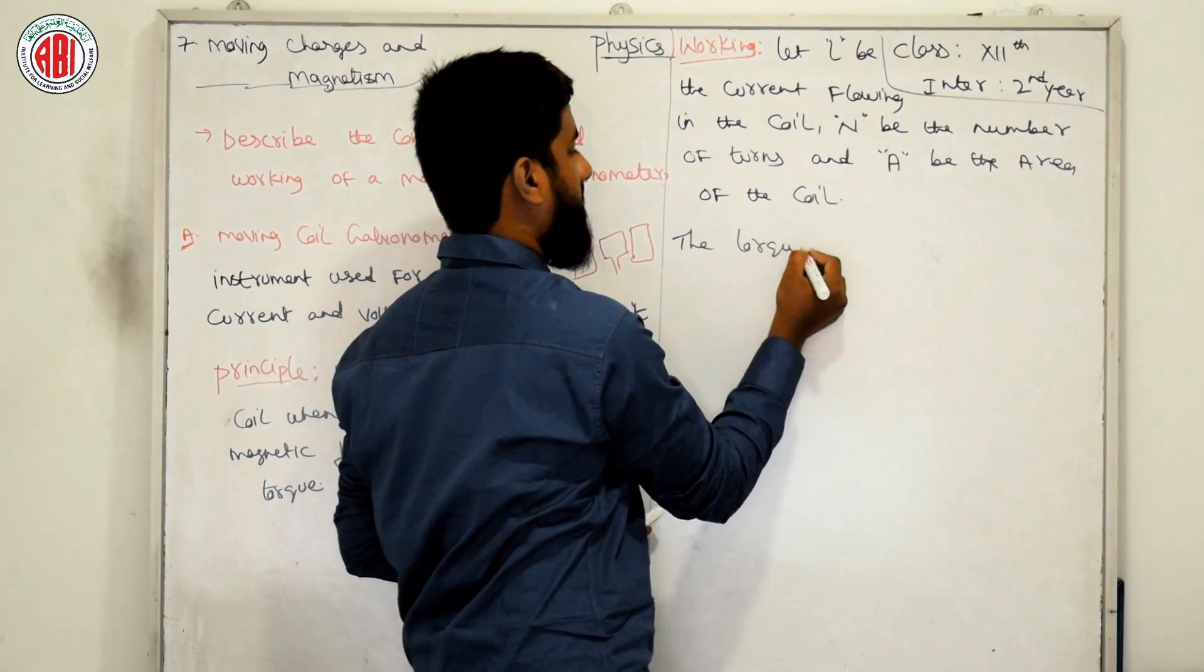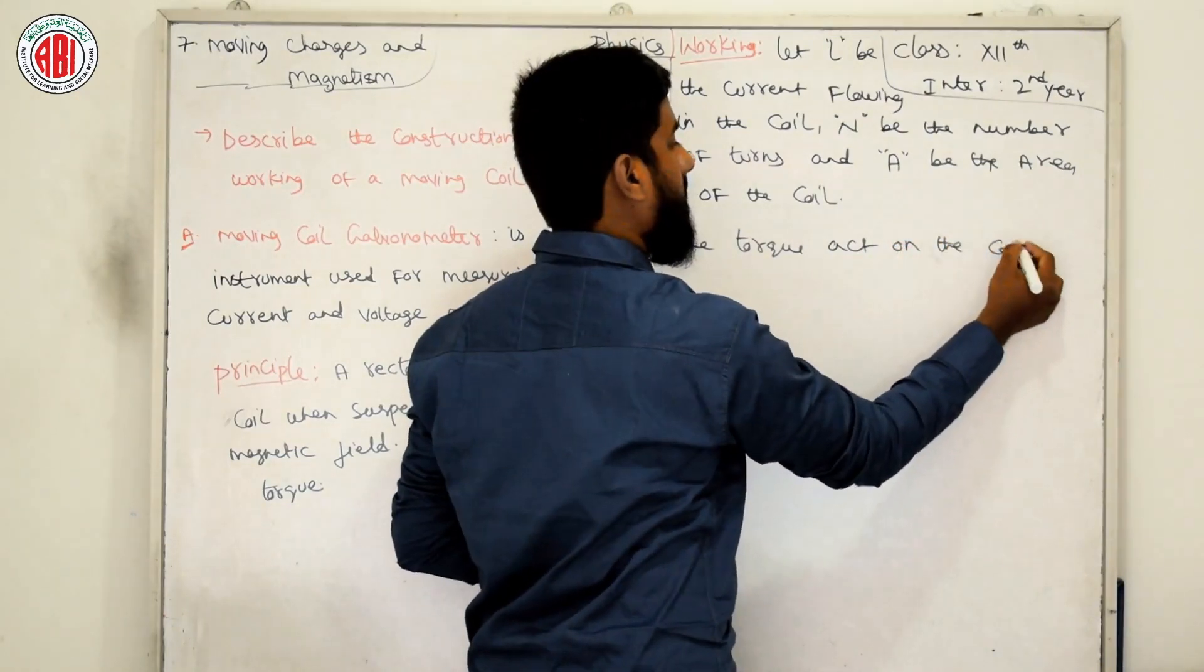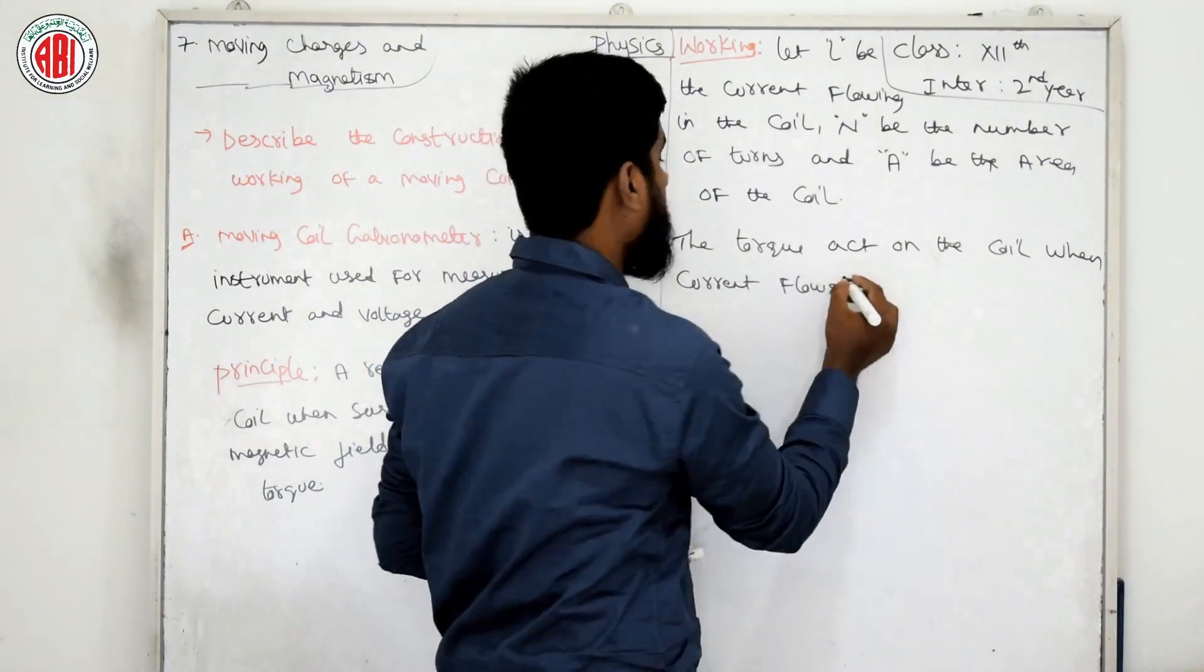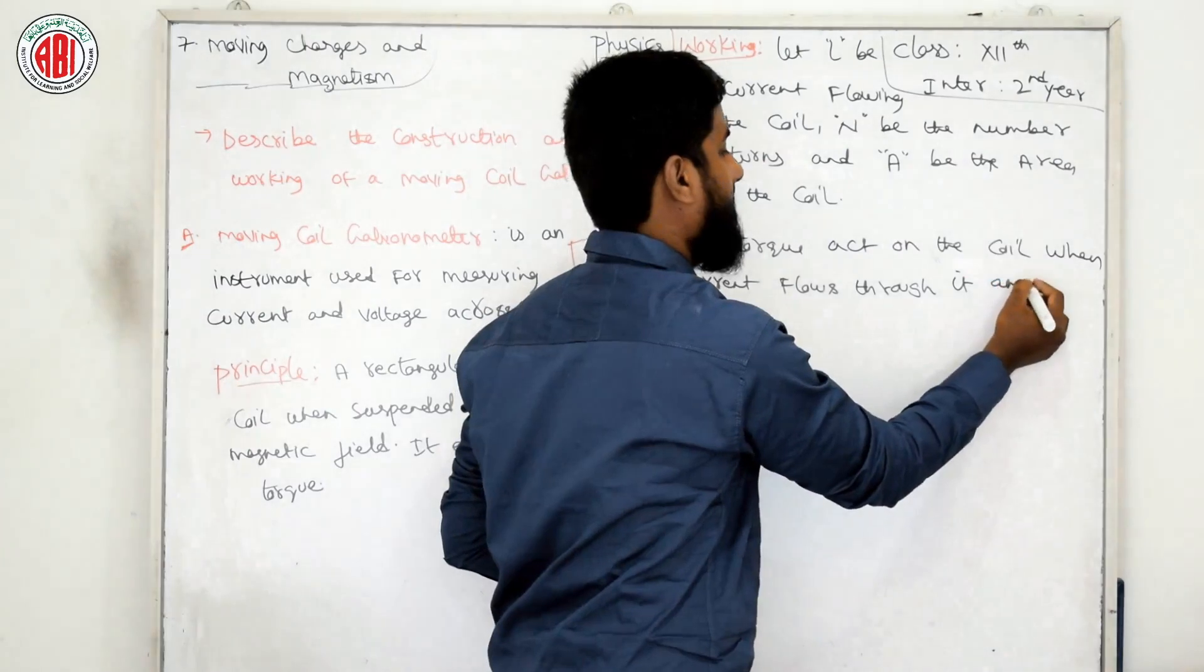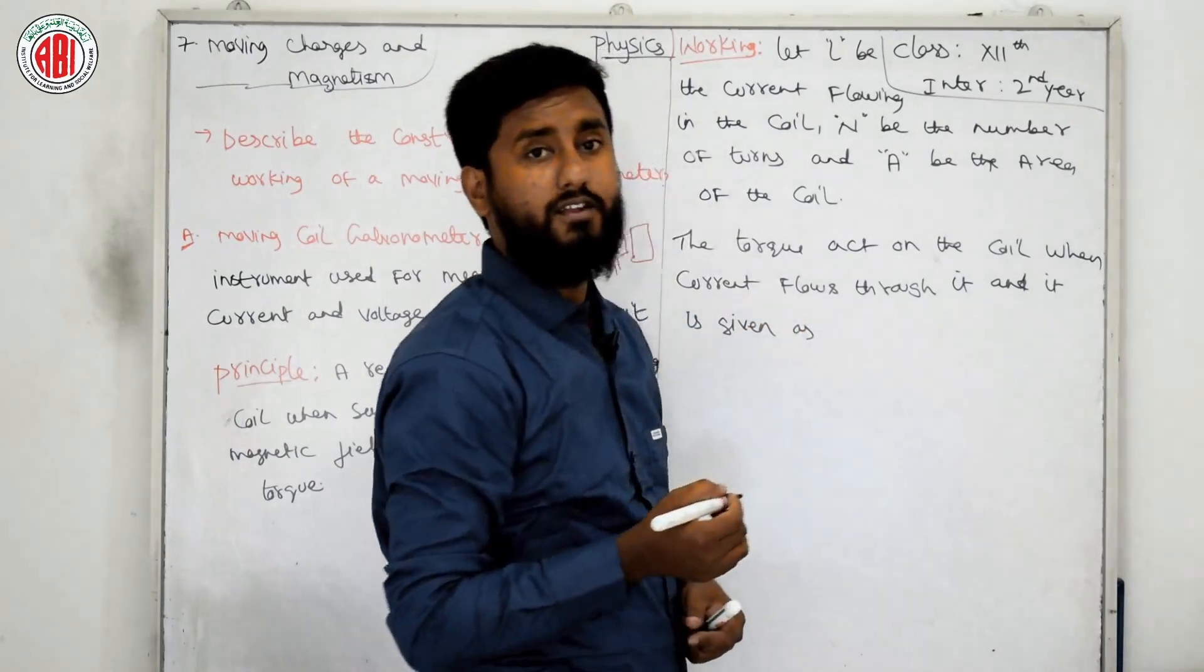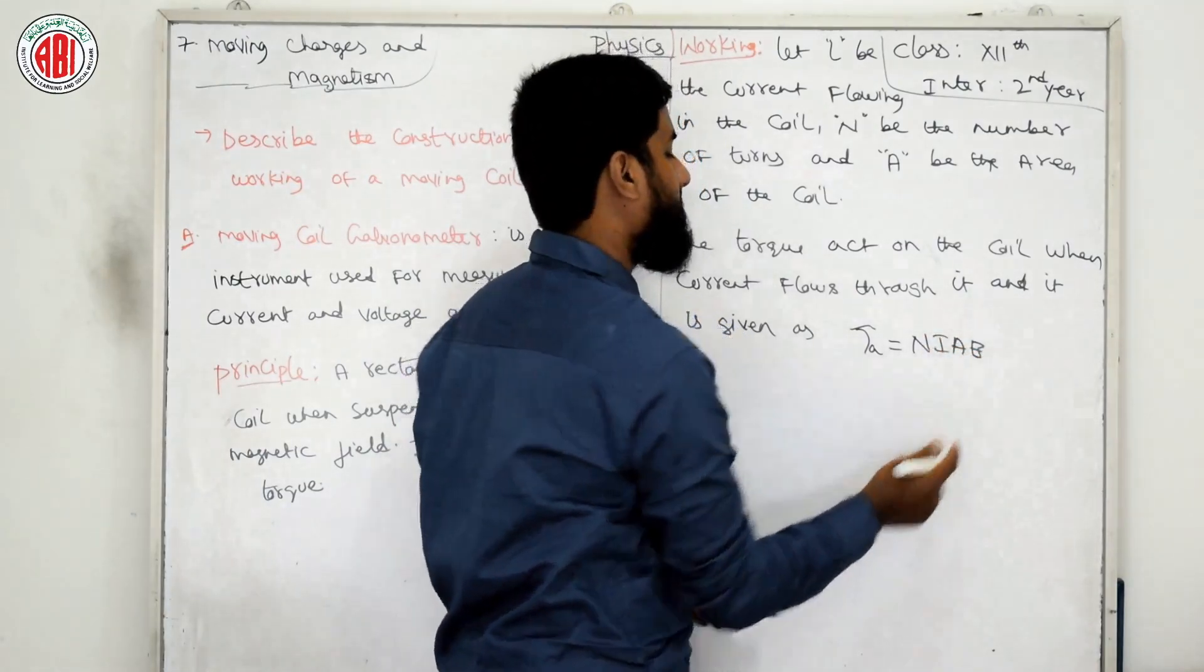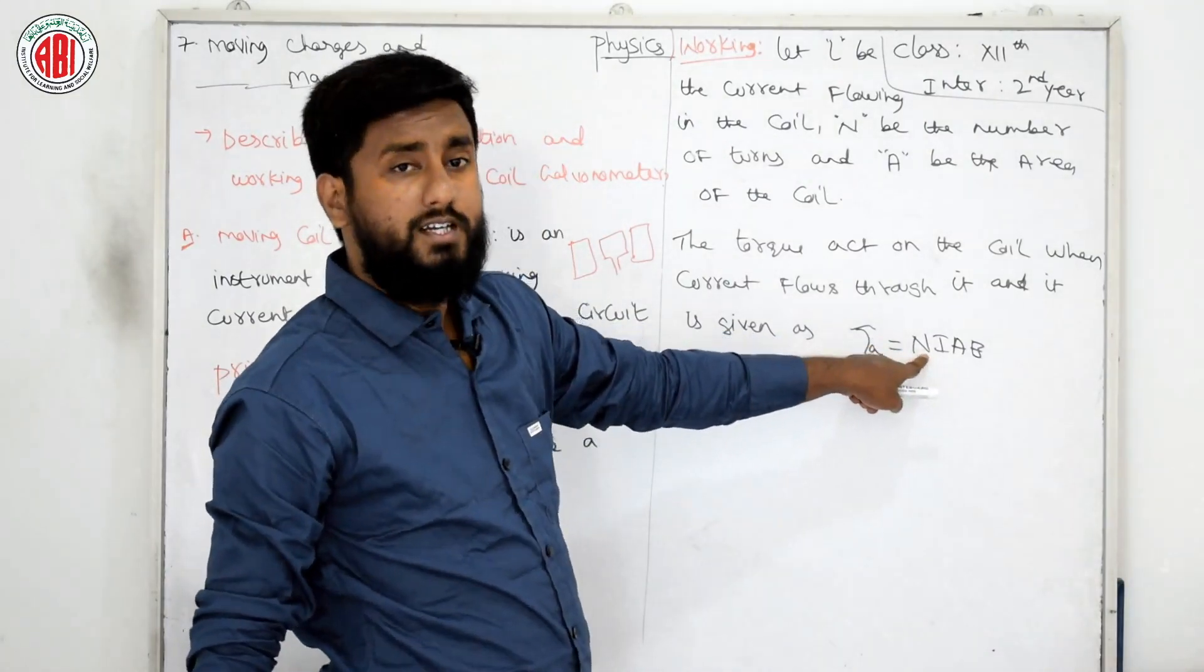The torque acting on the coil when current flows through it is given as tau equals NIAB. Here N is number of turns, I is current, A is area, B is magnetic field, and tau is torque.